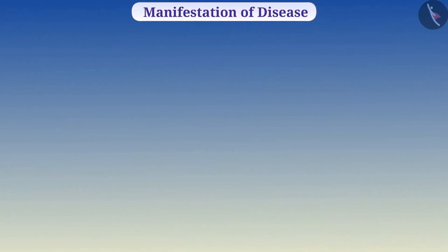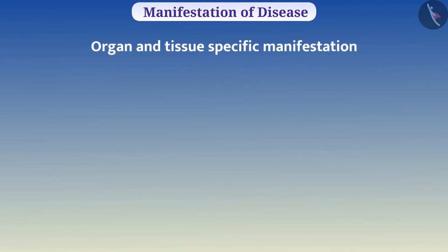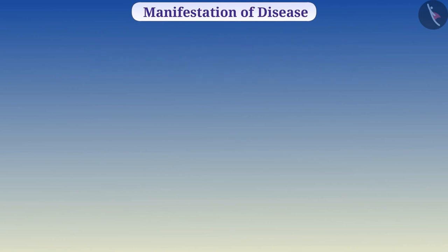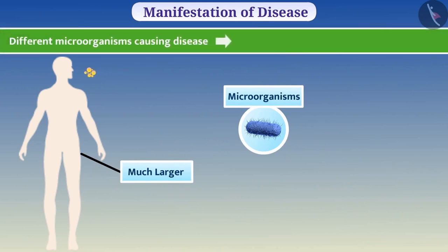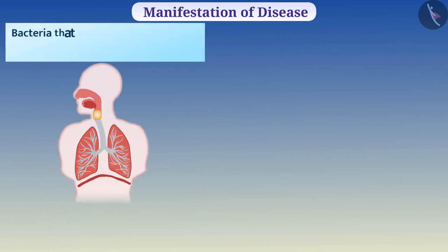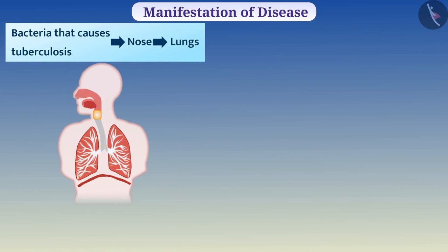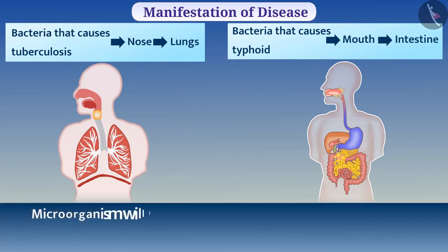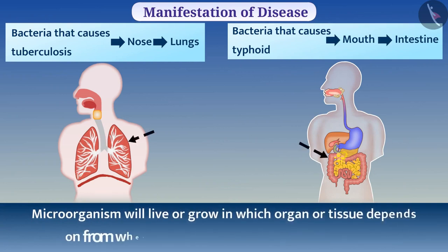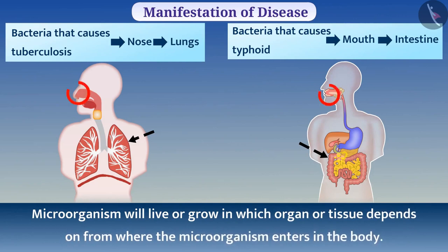Now let us understand organ and tissue specific manifestation in detail. Our body is much larger than microorganisms. Different microorganisms causing disease can enter the body by different modes. For example, bacteria that cause tuberculosis enter via air through the nose and grow inside the lungs, and bacteria that cause typhoid enter via the mouth and grow in the intestine. The organ or tissue where a microorganism lives depends on where it enters, but this is not always the case.